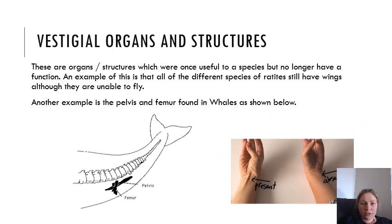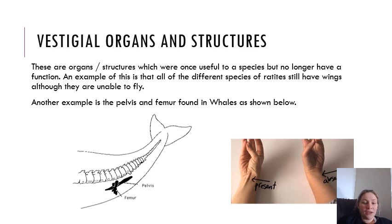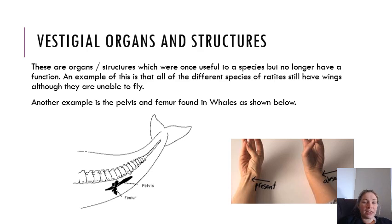Some organisms also have vestigial organs and structures — organs that were once useful but no longer have a purpose. For example, ratites still have wings although they can't fly. Another example is the pelvis and femur of a whale: although whales are no longer land-dwelling creatures, they still have tiny bones that develop in those positions but have no use. In humans, our appendix is a vestigial organ — it was important when our diet was much more plant-based, but it can now be removed without impacting us.